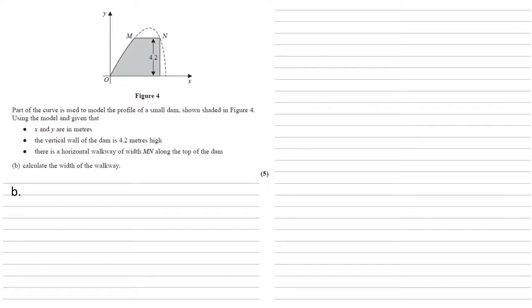Part of the curve is used to model the profile of a small dam, shown shaded in Figure 4. Using the model, and given that x and y are in metres, the vertical wall of the dam is 4.2 metres high, and there is a horizontal walkway of width MN along the top of the dam. We need to calculate the width of the walkway.